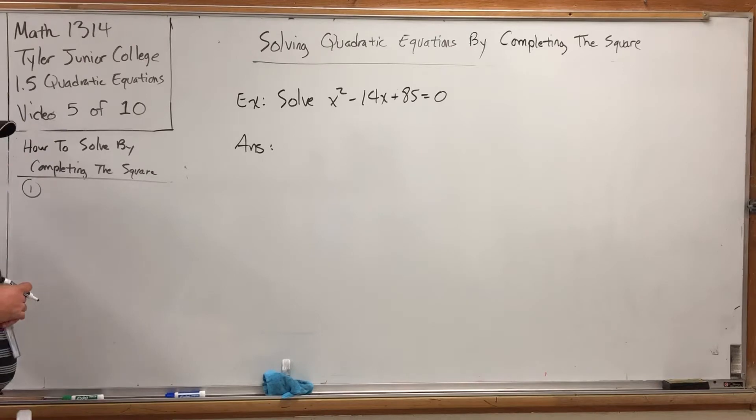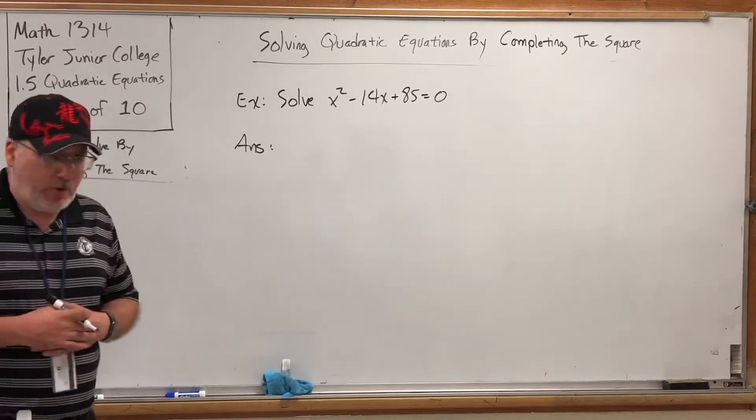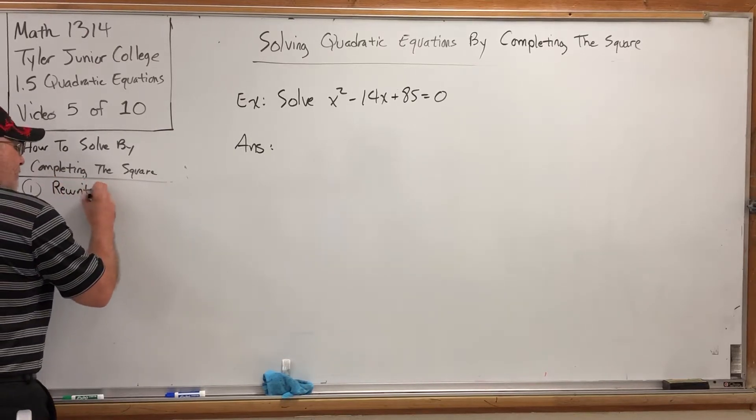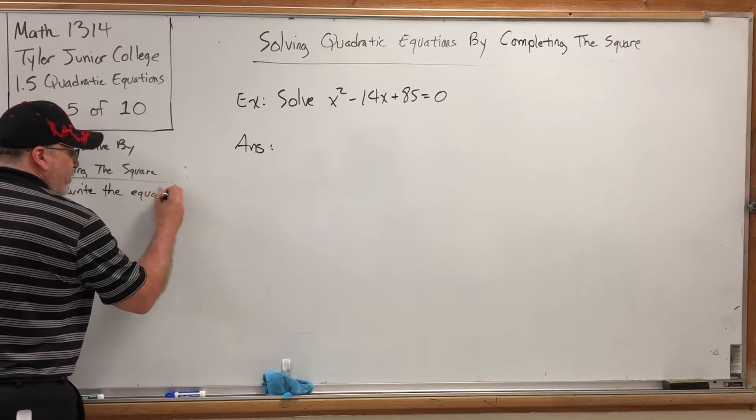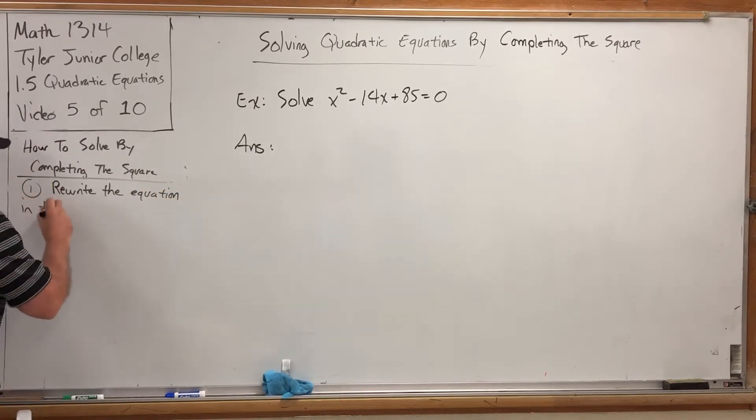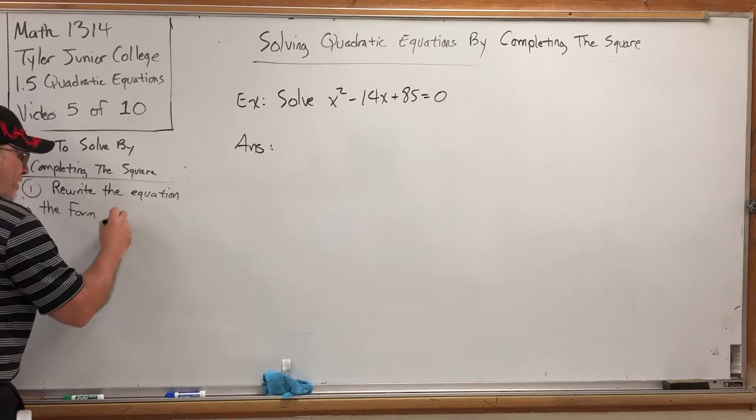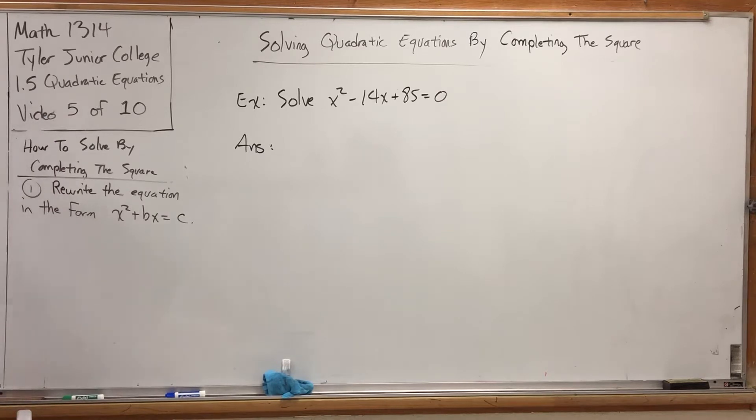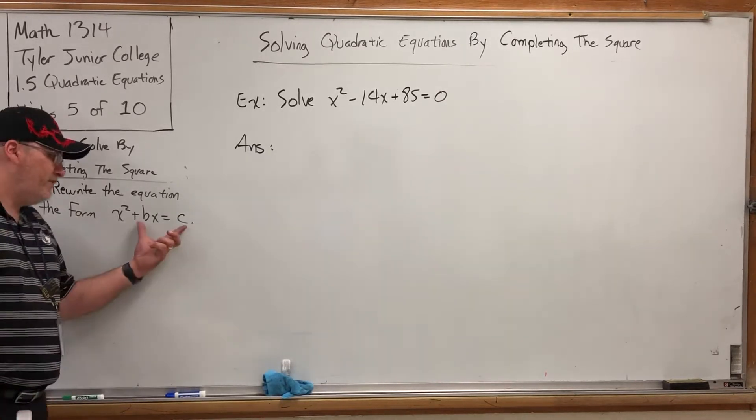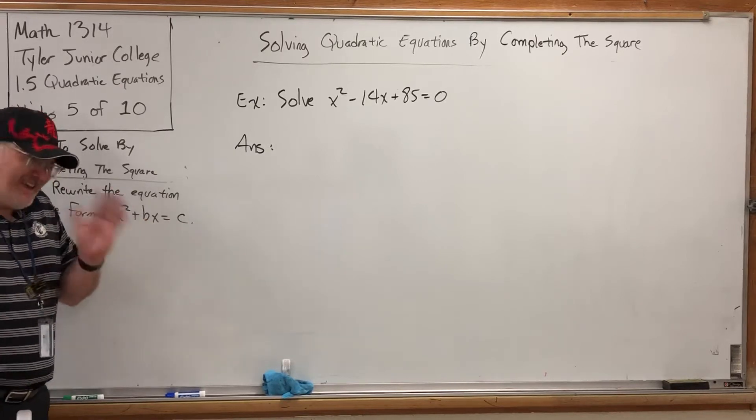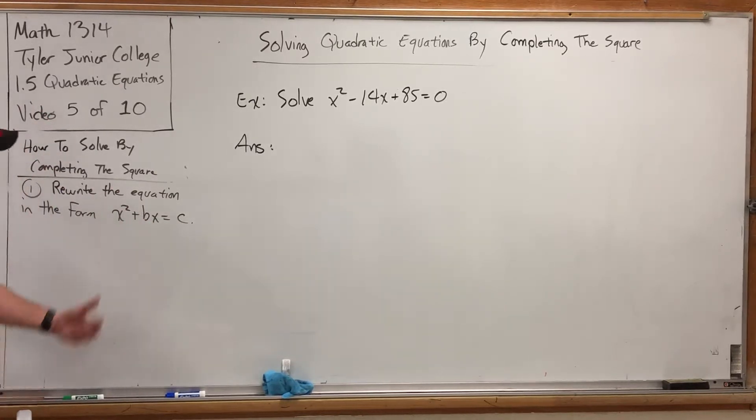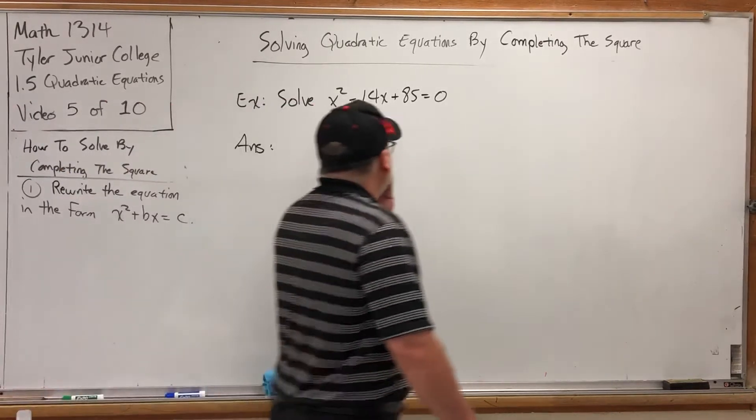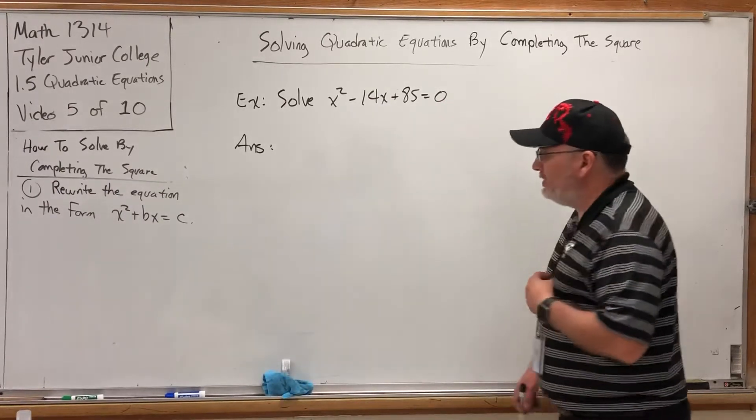Well, the objective behind completing the square is to get rid of the constant term and replace it with a better one. So, your first move is rewrite the equation. Rewrite the equation in the form x squared plus bx equals c. If you're thinking, don't you mean negative c? Well, remember, these variables can be positive or negative. So, it's not really necessary to write negative c. Basically, you need an x squared, an x term, and then the constant on the right side.